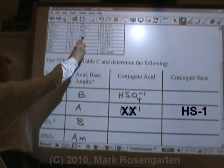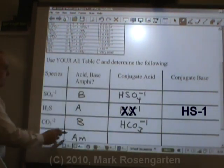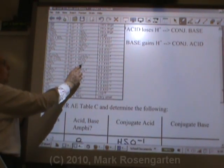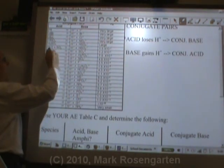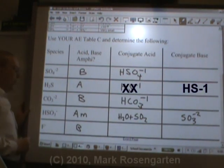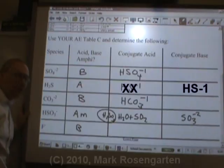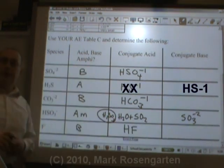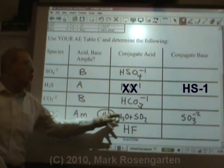CO3²- is a base — its conjugate acid is HCO3-. HSO3- is amphiprotic. If HSO3- acts as an acid, its conjugate base is SO3²-. If HSO3- acts as a base, its conjugate acid is H2SO3. F- is a base — its conjugate acid is HF. Find where it is on the table, and the other side gives its conjugate. If it's amphiprotic, it has two possible conjugates.